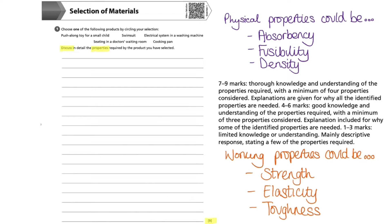Before we begin writing our answer, let's recap what we mean by the term 'properties'. There are two types: physical properties and working properties. Physical properties — such as absorbency, fusibility, and density — are measurable characteristics of a material. Working properties describe how the material reacts when a force is applied, and could include strength, elasticity, or toughness.